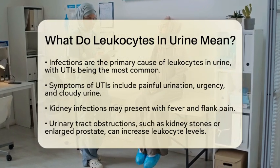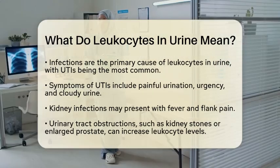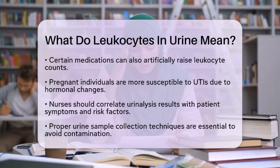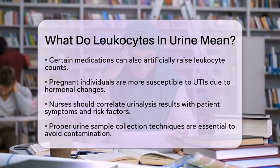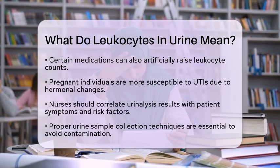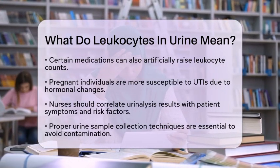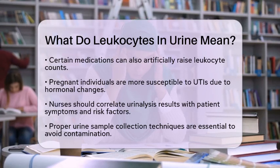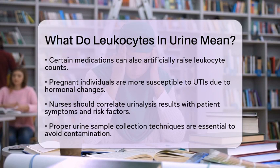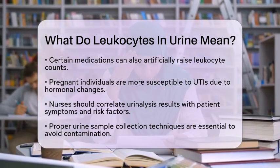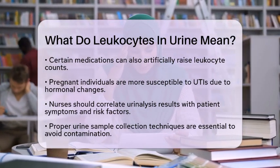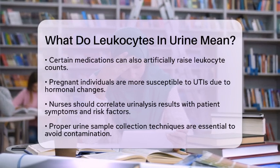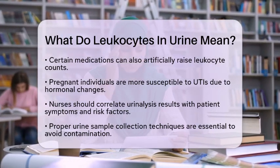Pregnant individuals are at a higher risk for urinary tract infections due to hormonal changes and urinary stasis, so monitoring is essential during this time. As a nurse, it is important to assess patients thoroughly — correlate urinalysis results with symptoms like pain or fever, and consider risk factors such as catheter use or diabetes. When collecting urine samples, instruct patients on clean-catch techniques to minimize contamination, educate them on the importance of hydration, timely voiding, and adhering to prescribed antibiotics. For those with recurrent urinary tract infections, discussing preventive strategies like cranberry supplements can be beneficial. Monitoring urine cultures is also key to confirming bacterial presence and adjusting treatments accordingly.